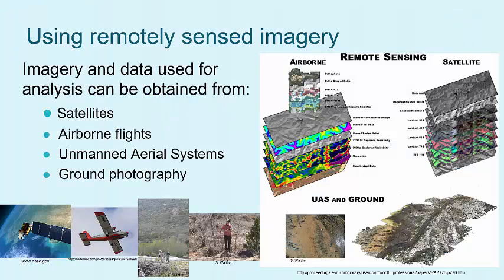Today, remotely sensed imagery is obtained from a variety of platforms and used in numerous ways. Broadly, the primary ways to capture imagery are from satellites, airborne flights via planes or helicopters, a wide range of types of unmanned aerial systems, and ground photography via a hand-held or a pole-mounted camera.